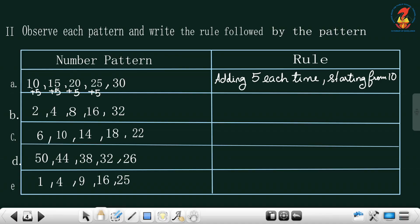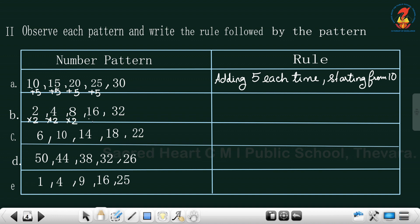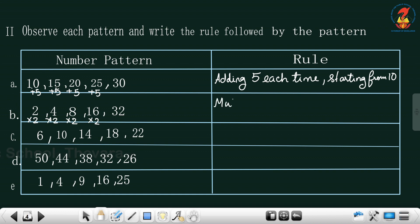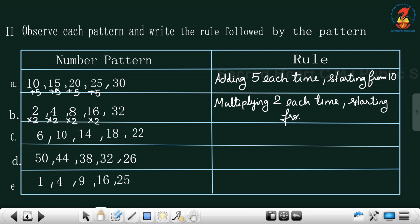Second series: 2, 4, 8, 16, 32. Let's multiply and see: 2 times 2 is 4, 4 times 2 is 8, 8 times 2 is 16, 16 times 2 is 32. So the rule is: multiplying by 2 each time starting from 2. Third series: 6, 10, 14, 18, 22. From 6 to 10 is plus 4, 10 plus 4 is 14, 14 plus 4 is 18, 18 plus 4 is 22. So the rule is: adding 4 each time starting from 6. The next two questions you can do yourself.